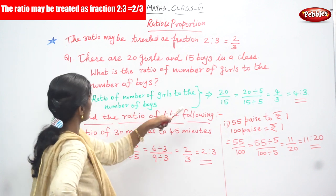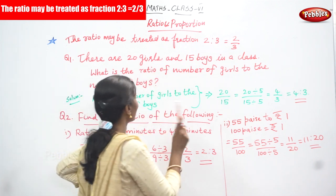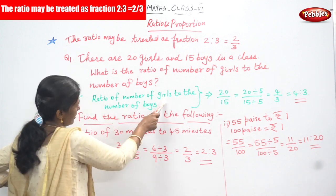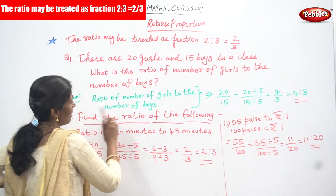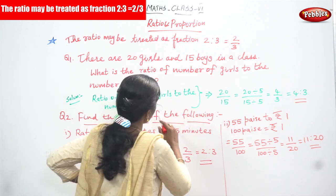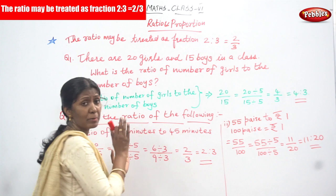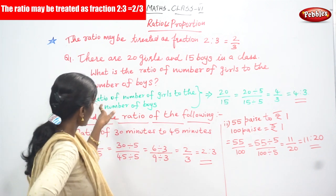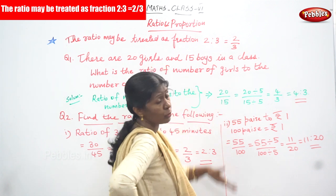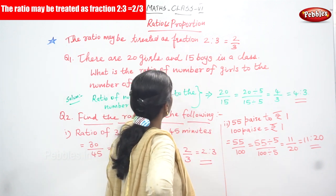Solution: the ratio of number of girls to the number of boys. We have to compare girls and boys. Ratio means comparison of division — comparison of division is called ratio. So number of girls is 20 and number of boys is 15. So that is 20 divided by 15.